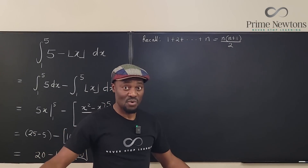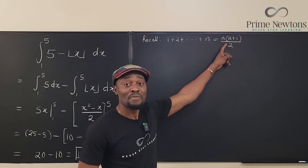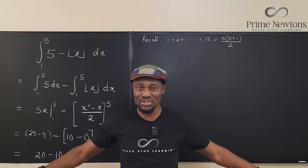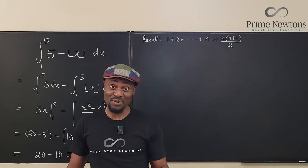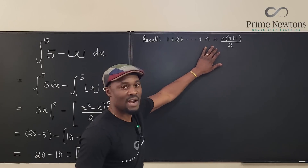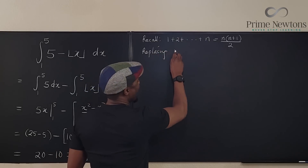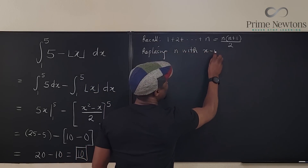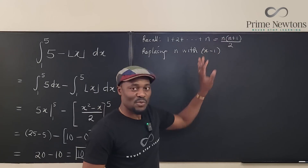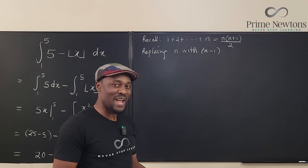Now we need to modify this formula because with the floor function, something is lost — the very first rectangle in your Riemann sum is missing. So we modify by replacing n with x minus 1, and I'll explain why very soon.